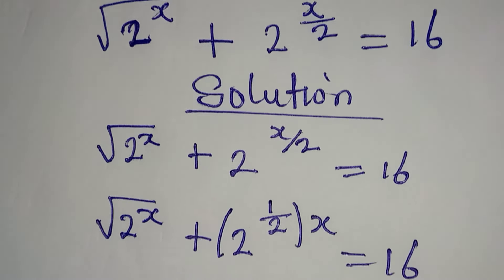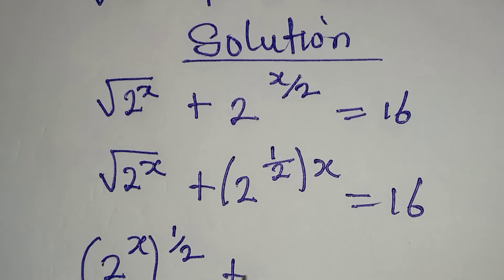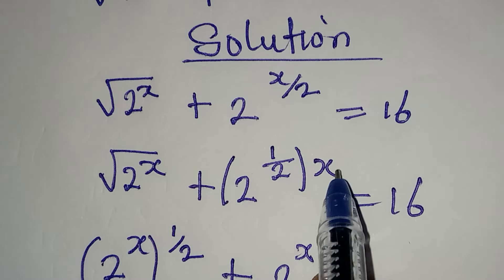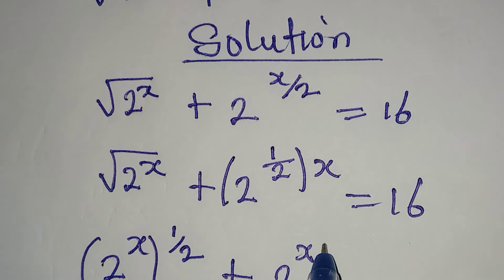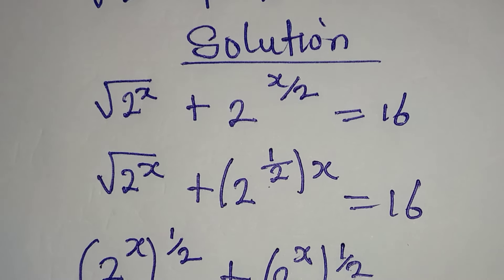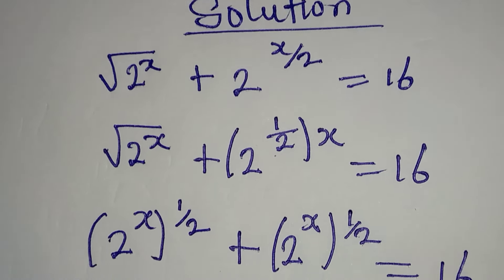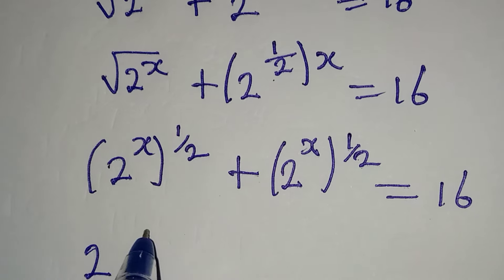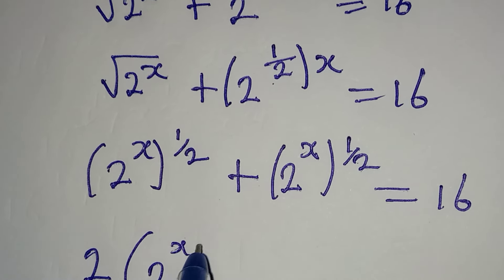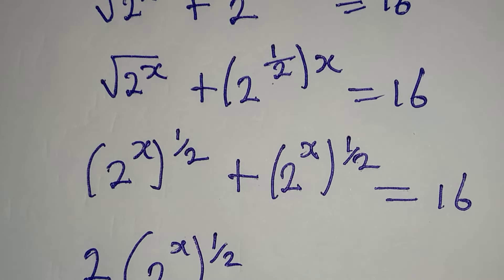From here we have square root of 2 to the power of x, plus here we can have 2 to the power of 1 over 2, and this is to the power of x, and this is equal to 16. Before then, let's work on this. This is the same thing as 2 to the power of x to the power of 1 over 2, because that is the same as square root of 2 to the power of x.